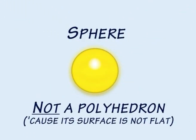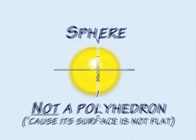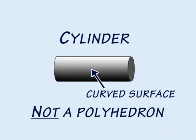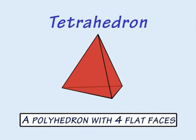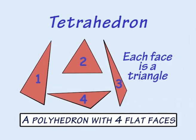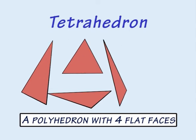So a sphere is not a polyhedron because its surface is curved. And similarly, the curved barrel of the cylinder means it is not a polyhedron. A tetrahedron is a polyhedron because each of its four faces is a flat two-dimensional triangle.